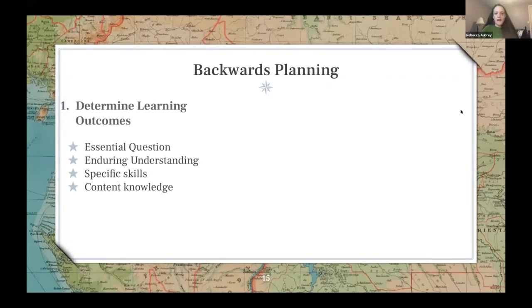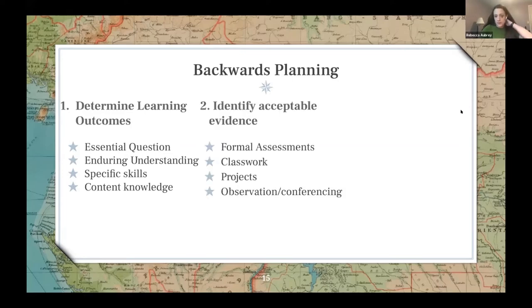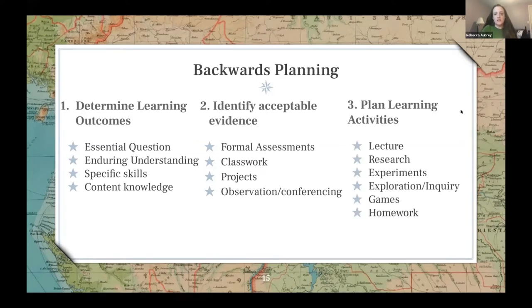I approach building this differentiation model through backwards planning. Step one: begin with your learning objectives — identify your essential question and the specific skills and knowledge students need to acquire. Step two: identify how you'll know whether students have met those learning goals — the evidence through assessments, projects, and observation. Step three: once you know how you'll assess, you begin to plan the learning activities that will help students work towards those goals. I'm hoping we can go through each of these steps and how you can bring in choices that ensure differentiation for all students.